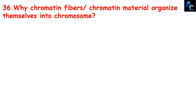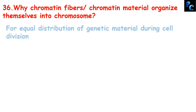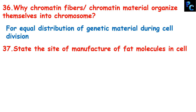Why do chromatin fibers or chromatin material organize themselves into chromosomes? During cell division the chromatin material organizes itself into a condensed structure called a chromosome. It does this for equal distribution of genetic material during cell division.